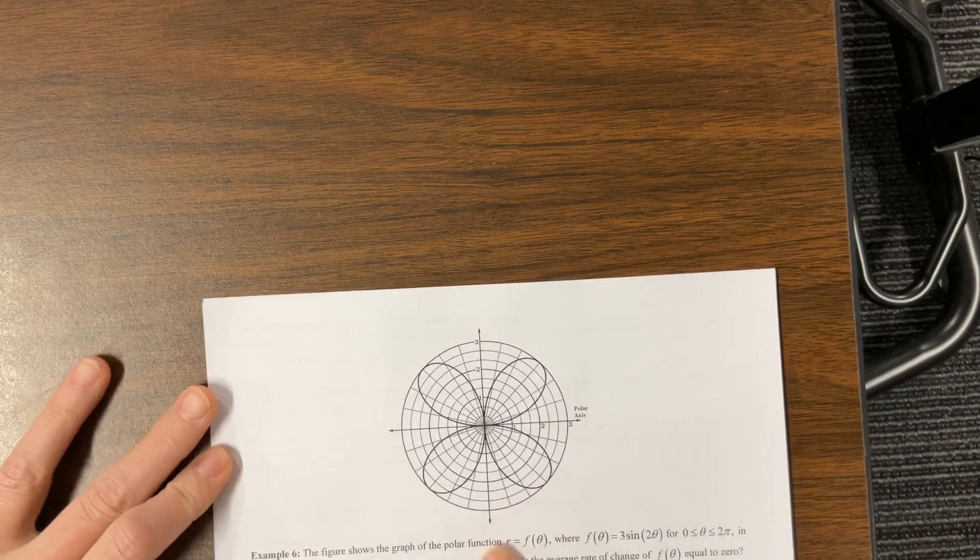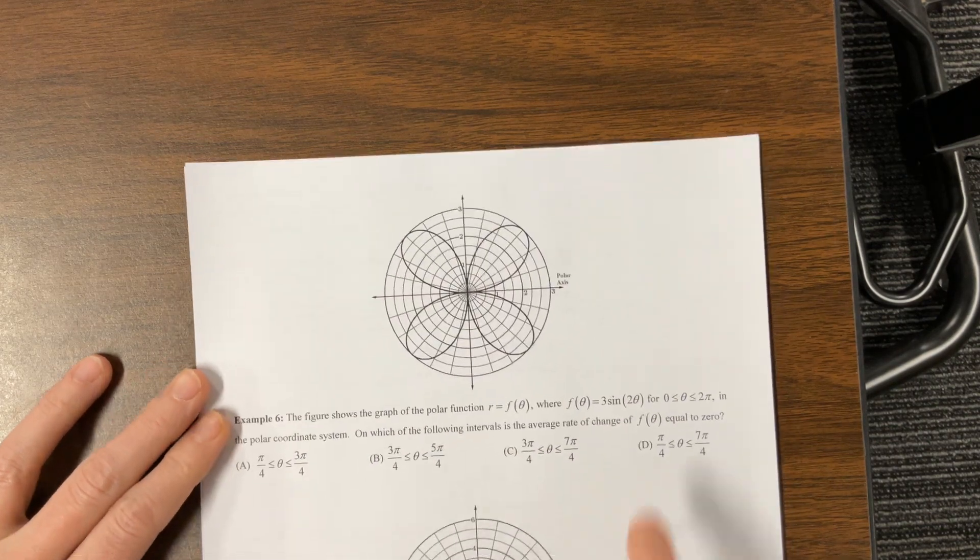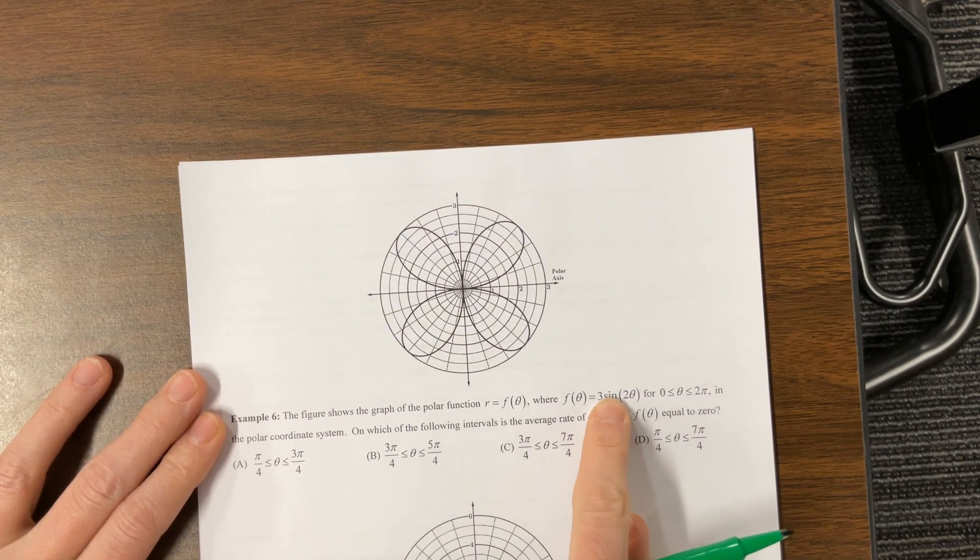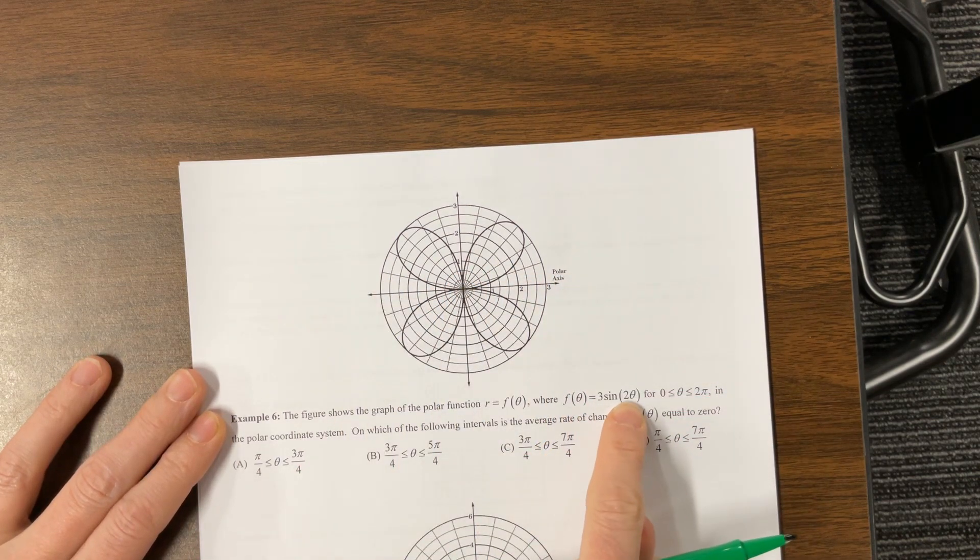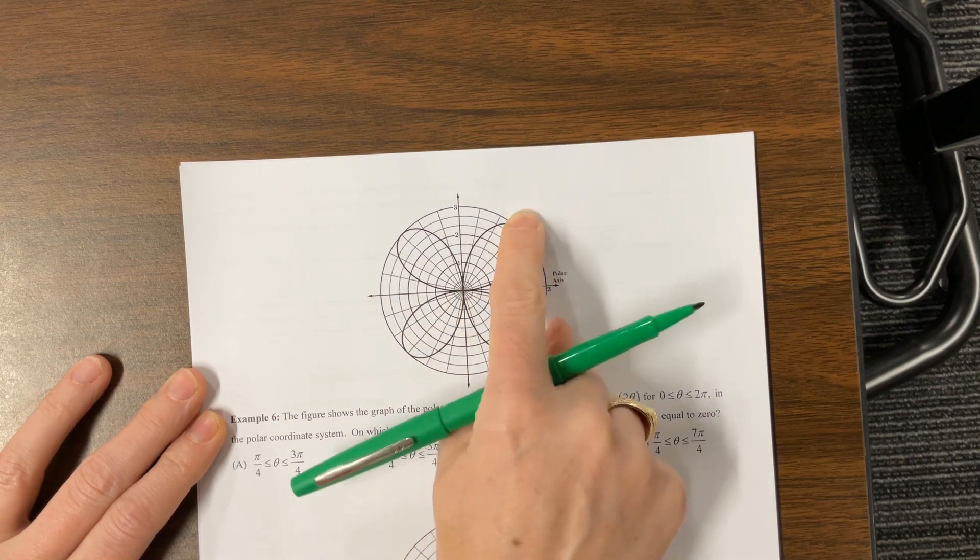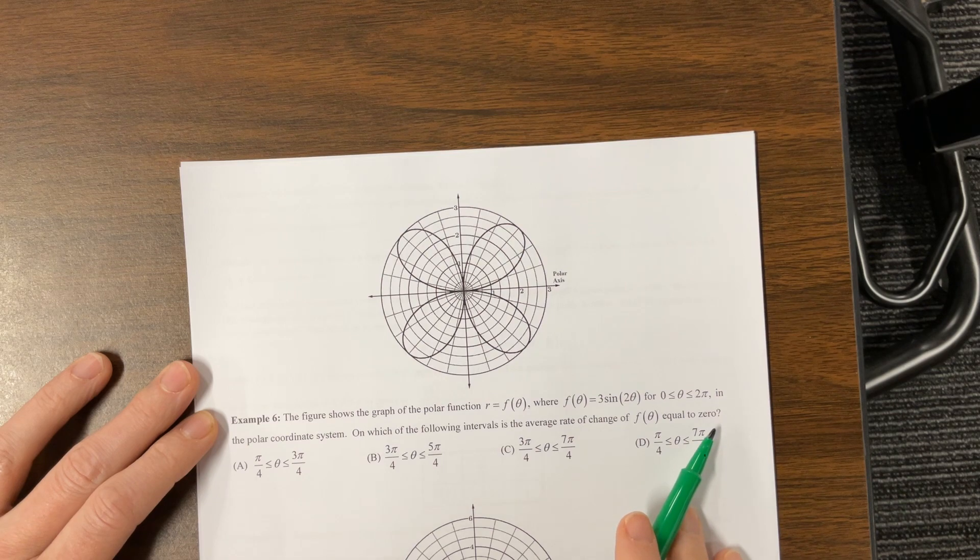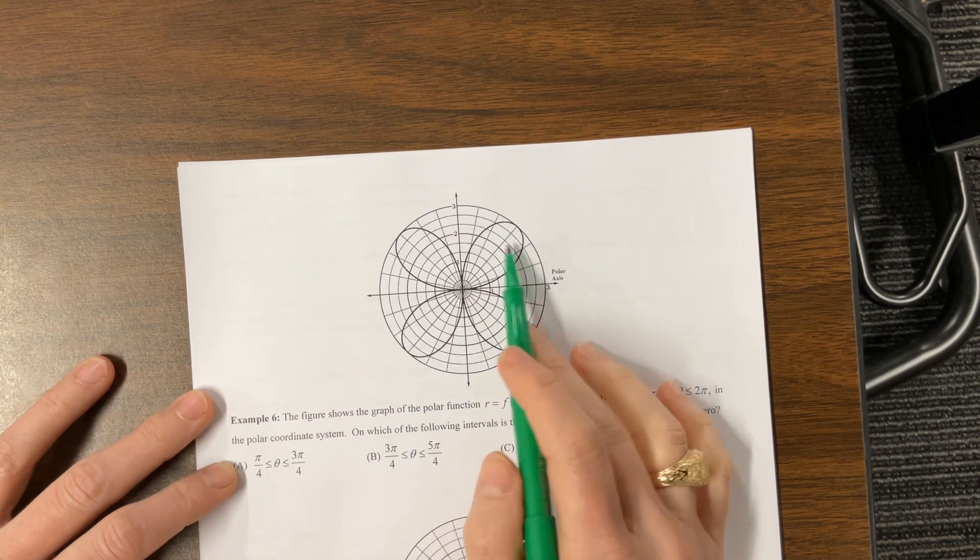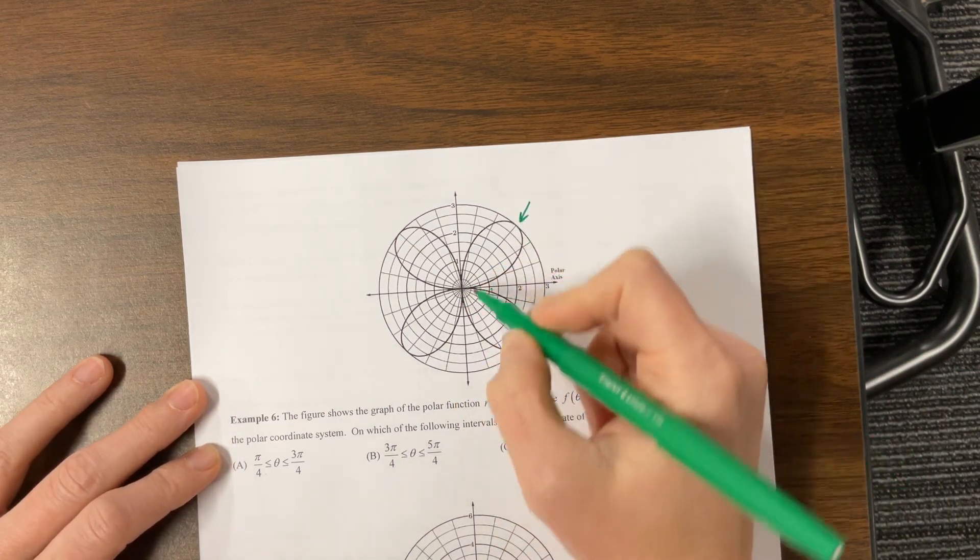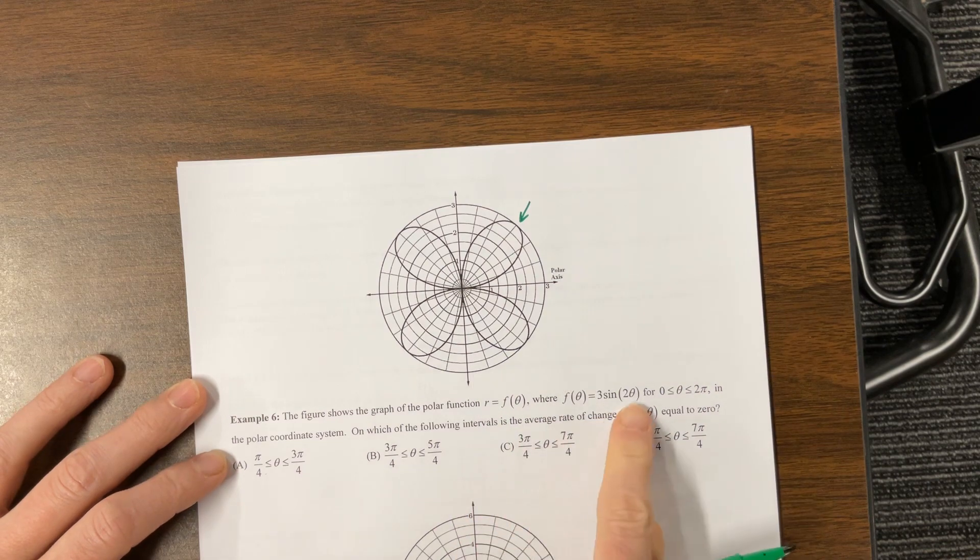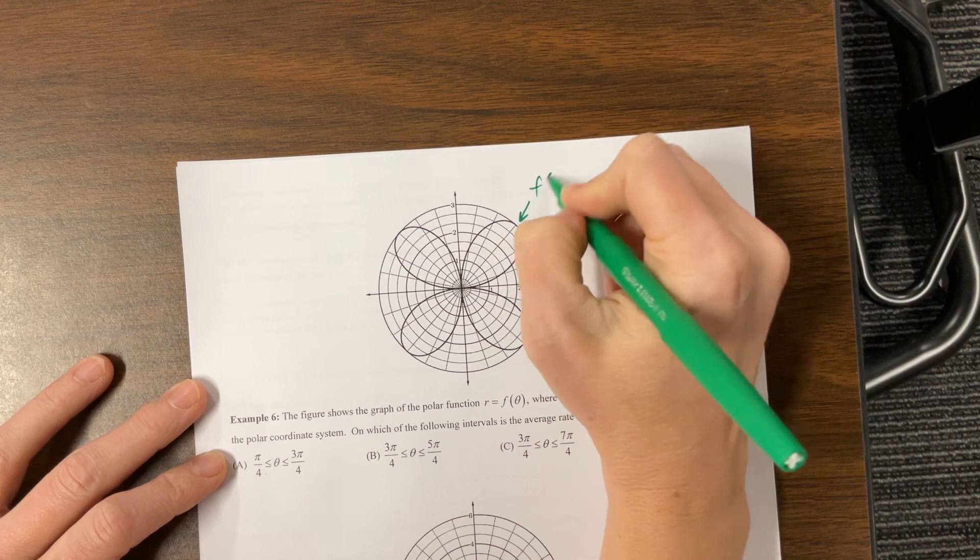Let's keep going. We have this rose, and they give us the equation r equals 3 sine 2 theta. I agree, this equation matches that graph. How do I know? The 2 tells me there's four petals, sine tells me it's not going to be on the line theta equals 0, because sine of 0 is 0, so it has to go here and then come out. On which of the following intervals is the average rate of change equal to 0? Let's see, pi over 4 to 3 pi over 4. If pi over 4 is going to be here, we start at 0. When I plug in pi over 4, I get sine of pi over 2 is 1, that's 3. So this is f of pi over 4.